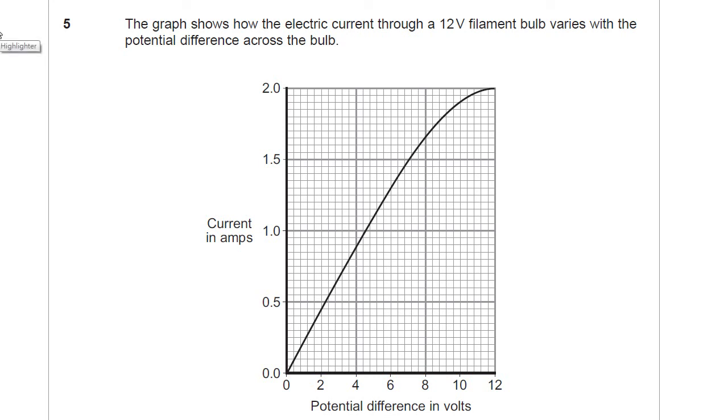Question 5 is asking us about a filament bulb. You've probably done this experiment in your physics studies. We found out that a filament bulb doesn't obey Ohm's law. Ohm's law is when it's a straight line graph, but this isn't a straight line graph, it's not a directly proportional relationship. The question is going to be about this graph and this situation here where something strange happens to the resistance of the filament bulb, and it's no longer a constant resistance.